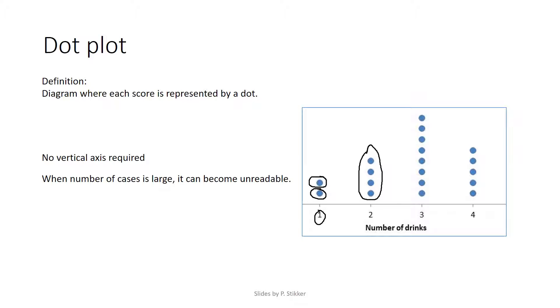This means two things. The first is that there's actually no vertical axis required. So as you can see, there's nothing here on the left indicating how many, because each dot is already representing a case.